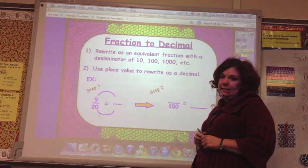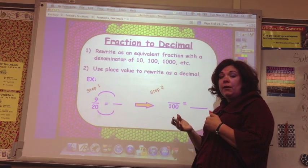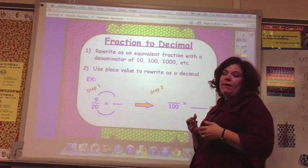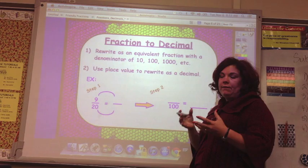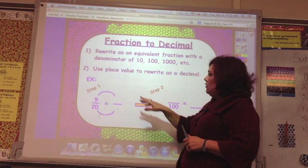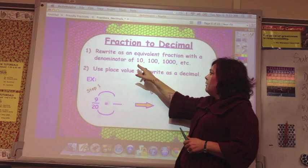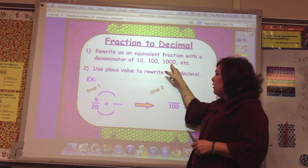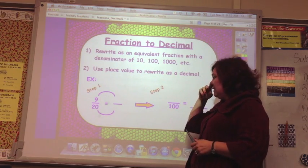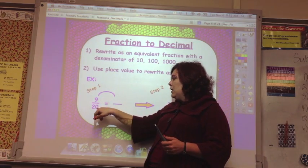With fraction to decimal, because it's much easier to look at a decimal and know where it goes than it is a fraction. With fractions, you have to find a common denominator. You have to build models. With decimals, it's just like money. So the steps, and write this in your notes, are to rewrite an equivalent fraction with a denominator of 10, 100, or 1,000, and use place value to rewrite as a decimal. That's step two.